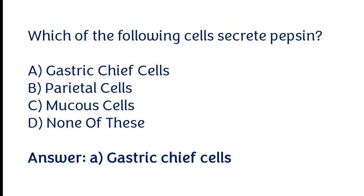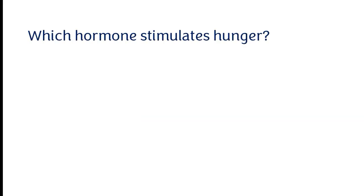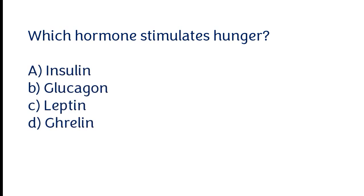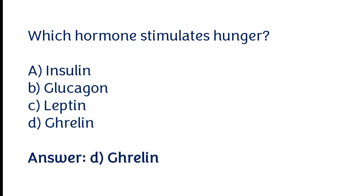The correct answer is option A. Gastric chief cells secrete pepsin. Which hormone stimulates hunger? Options: a) Insulin, b) Glucagon, c) Leptin, d) Ghrelin. The correct answer is option D. Ghrelin hormone stimulates hunger.